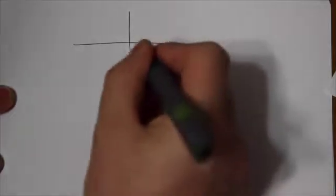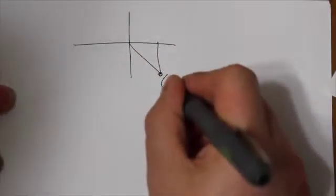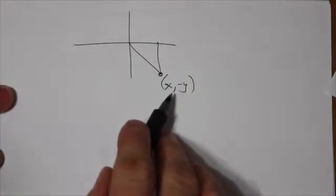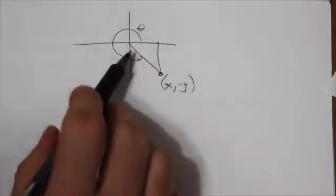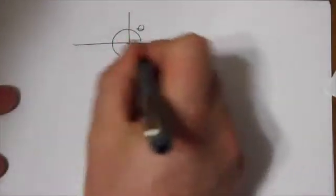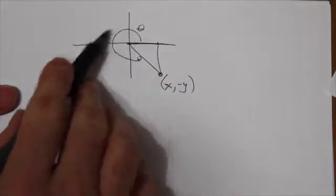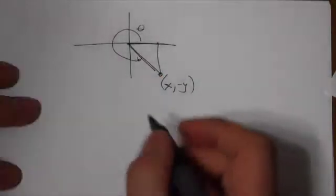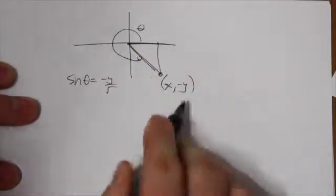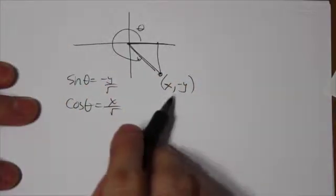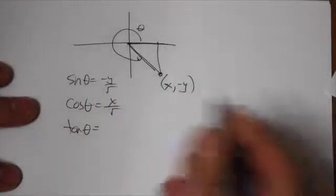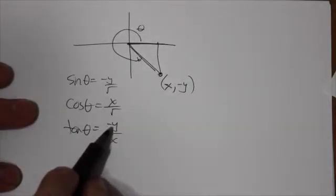Now let's flip that triangle over the y-axis again, putting us in the fourth quadrant. In the fourth quadrant it's only the y-coordinate that's negative. There's our rotation angle theta — always measured from the positive x-axis counterclockwise around to the terminal arm. Sine of theta is negative y over r, negative because y is negative. Cosine is positive x over r because x is positive here. Tangent is negative y over positive x, so tangent is also negative.